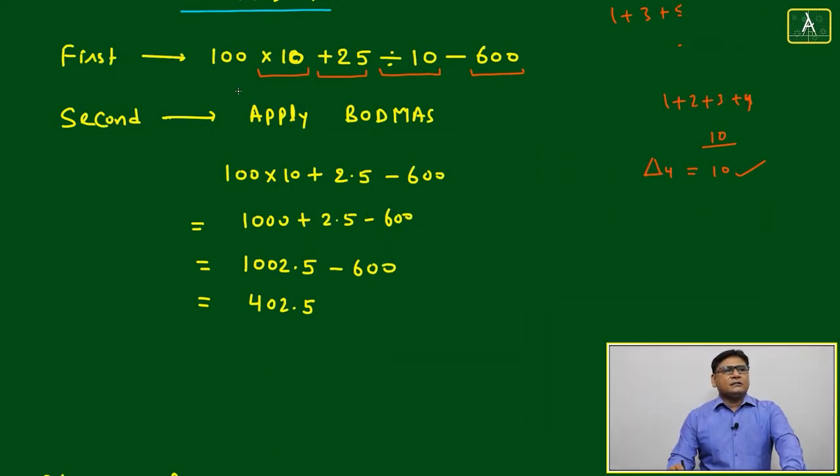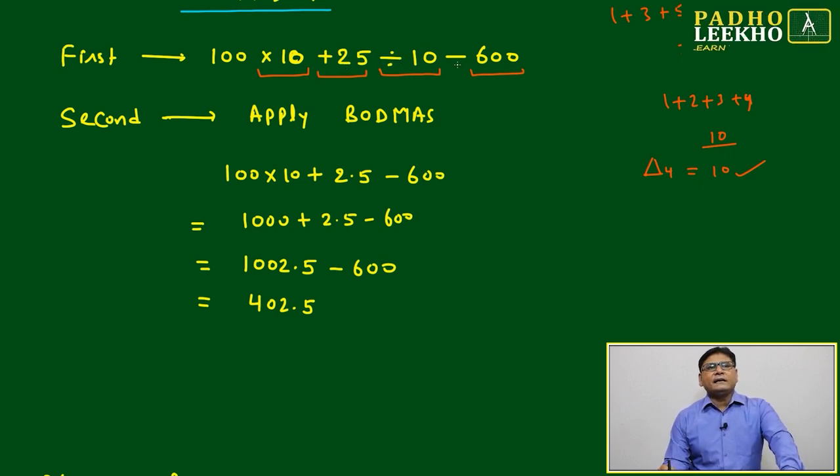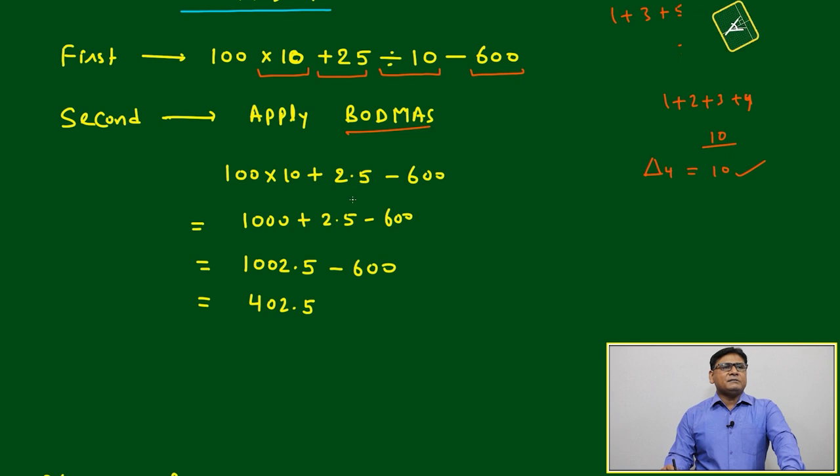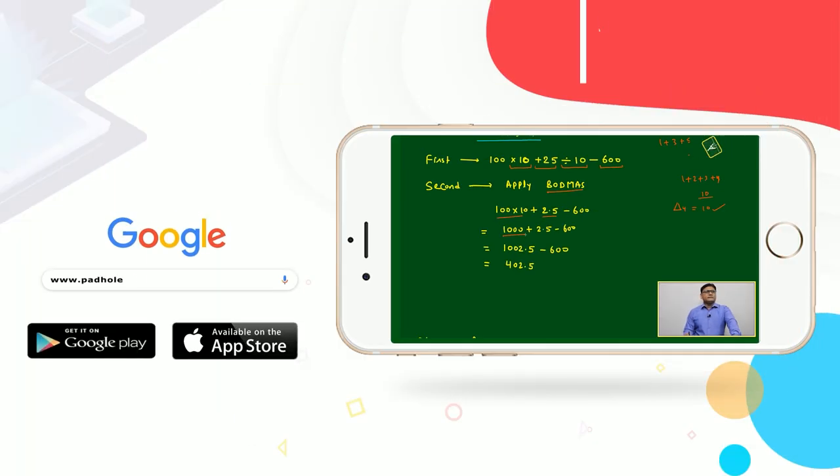Now you got one equation: 100 multiplied by 10, sum by 25 subtracted, divided by 10 and subtracted by 600. BODMAS you have to apply. No need to forget. Then first we will apply for division, you will get 2.5 here. Then you have to apply multiplication, then you have to apply for addition, and finally you have to apply for subtraction. Finally you will get 402.5.